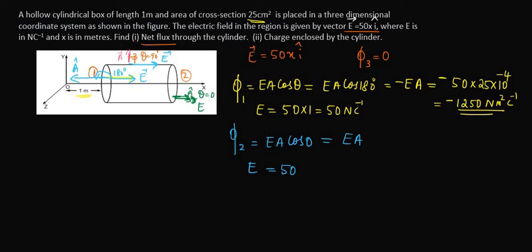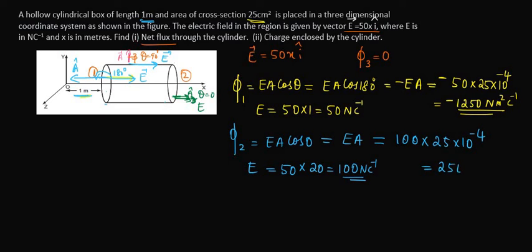The electric field is 50 times x. On the second surface, the cylinder starts at x = 1 meter and has a length of 1 meter, so x = 2 meters. Thus E = 50 × 2 = 100 Newton per coulomb. The flux phi 2 = 100 × 25 × 10⁻⁴ = 2500 × 10⁻⁴ Newton meter squared per coulomb.